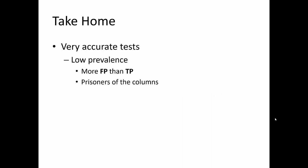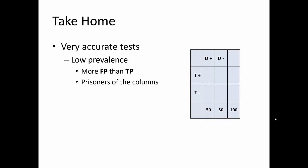So the take-home message here is that very accurate tests, when applied to a population that has a low prevalence of the disease, will result in more false positives than true positives. This doesn't mean the test is inaccurate — it means we are now prisoners of the columns. Because sensitivity and specificity are calculated within the columns without regard to the ratio between the columns, as prevalence decreases, you end up with many more false positives than true positives. That's just a function of the ratio shifting between the columns. The accuracy of the test hasn't changed; it's just that rare diseases are hard to find.